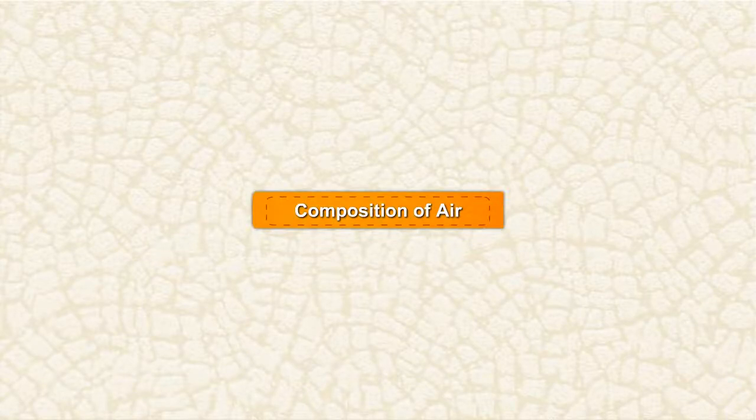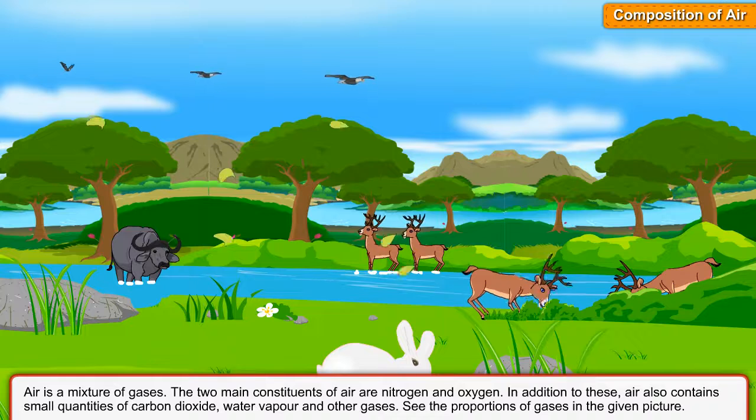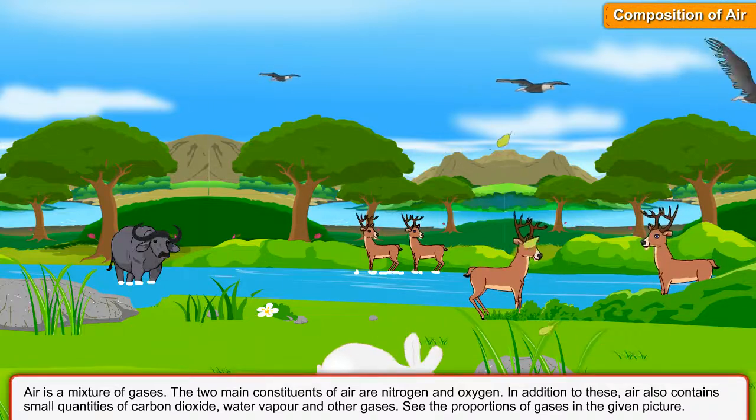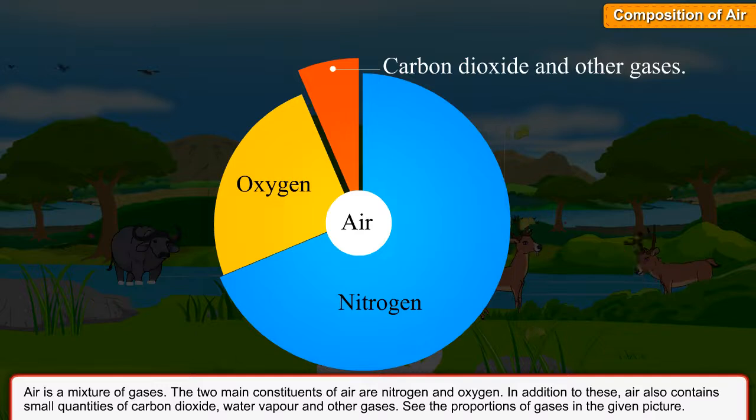Composition of Air. Air is a mixture of gases. The two main constituents of air are nitrogen and oxygen.